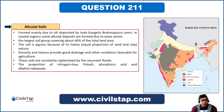Alluvial soil is formed mainly due to silt deposited by the Indo-Gangetic-Brahmaputra rivers. In coastal regions, some alluvial deposits are formed due to wave action. Alluvial soil is the largest soil group, covering about 40% of total land area. It is found mainly in the Indus, Ganga, and Brahmaputra river plains and also at coastal plains and river valleys.